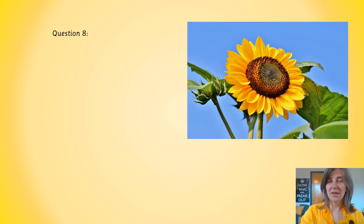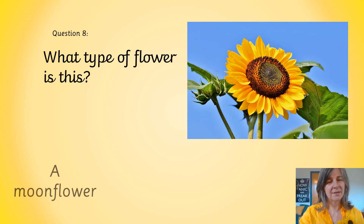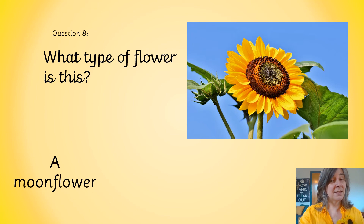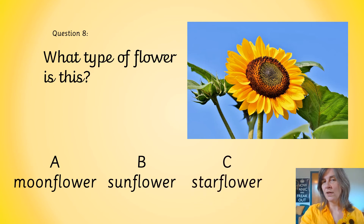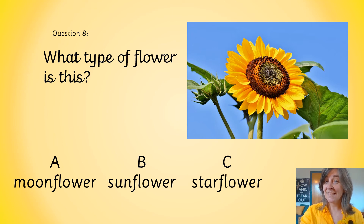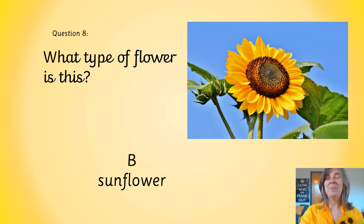Question 8. What type of flower is this? Is it a, a moonflower? Is it b, a sunflower? Or is it c, a star flower? It's b, a sunflower.